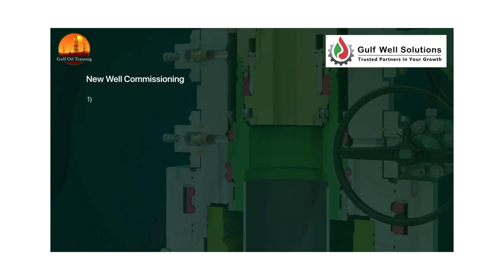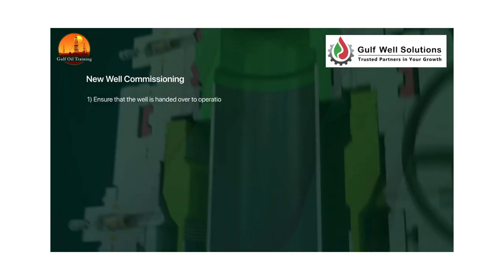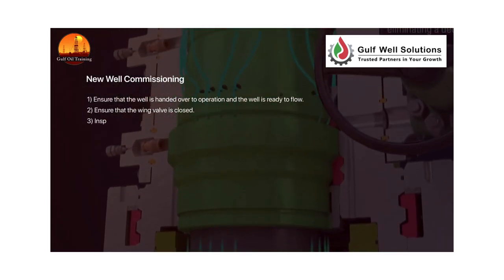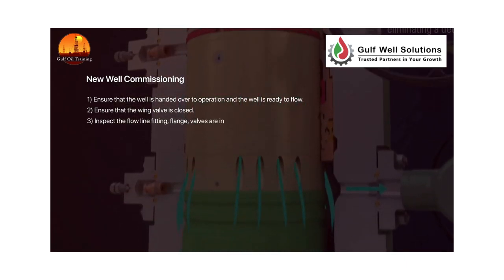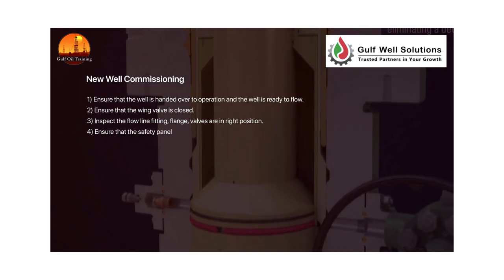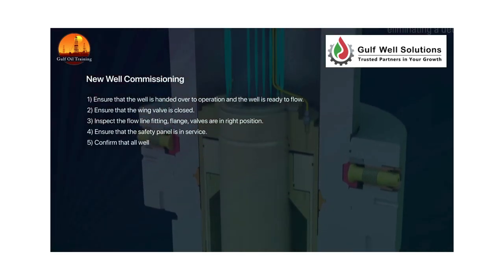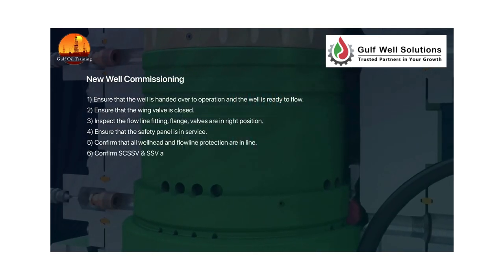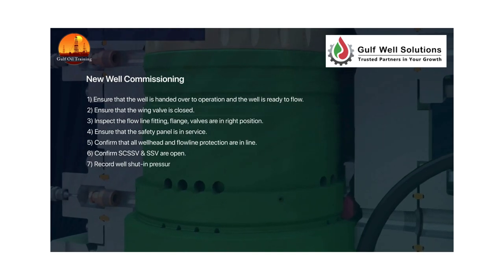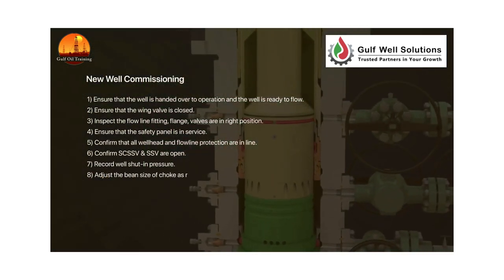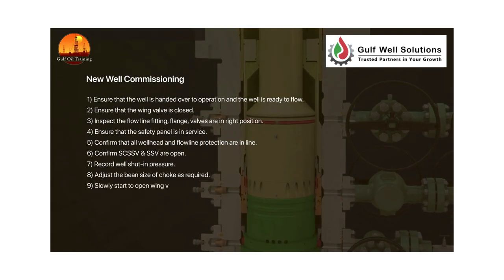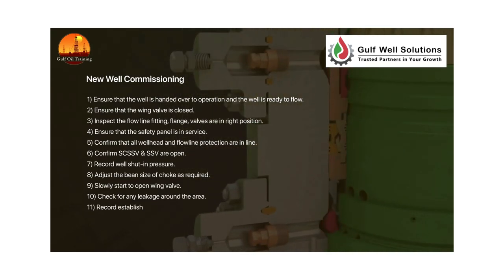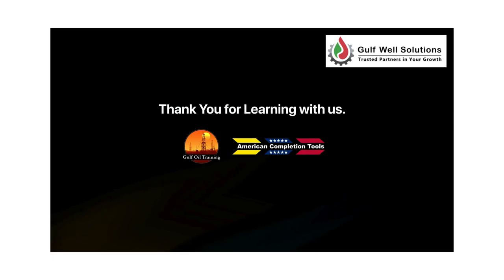New well commissioning steps: 1. Ensure that the well is handed over to operations and is ready to flow. 2. Ensure that the wing valve is closed. 3. Inspect the flow line fittings, flanges, and valves are in the right position. 4. Ensure that the safety panel is in service. 5. Confirm that all wellhead and flow line protection are in line. 6. Confirm that SCSSSV and SSV are open. 7. Record well shut-in pressure. 8. Adjust the bean size of the choke as required. 9. Slowly start to open the wing valve. 10. Check for any leakage around the area. 11. Record established wellhead parameters.